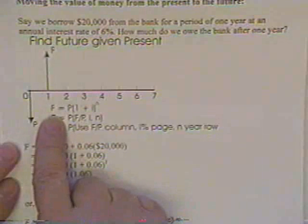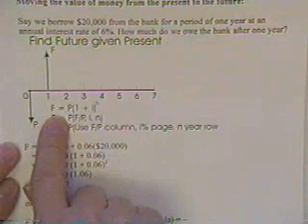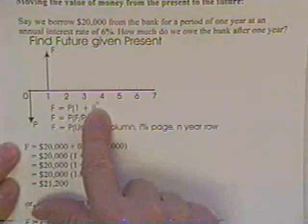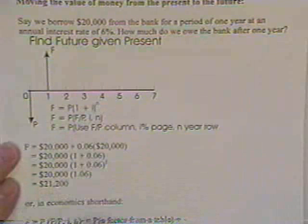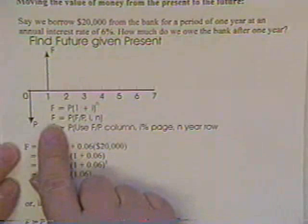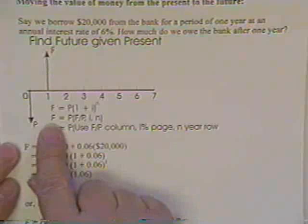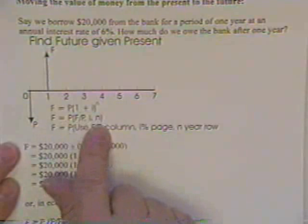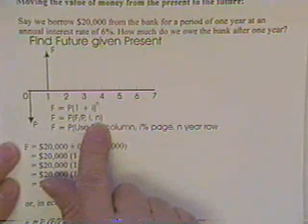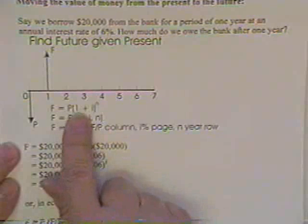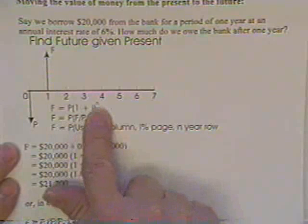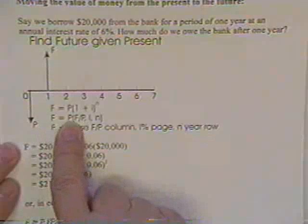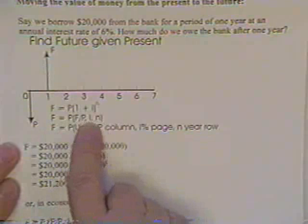The equation for such use of money is that the future value is equal to the present value times 1 plus the interest rate raised to the number of compounding periods, or in this case, the number of years that you wish to borrow the money. A very nifty way to write this down, which allows you to use interest tables, is to say that the future value of the money is equal to the present value of the money multiplied times a factor, and the factor is called F over P comma I comma N.